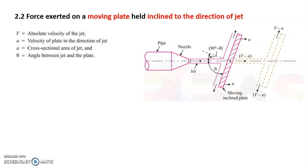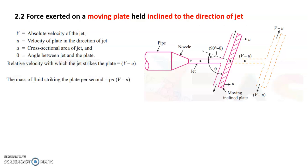The relative velocity with which the jet strikes the plate is not v — it is v minus u. We are concerned with the relative velocity, and the relative velocity with which the jet strikes the plate is v minus u. Now we calculate the mass of fluid striking the plate per second: mass per second is rho times a times (v minus u).